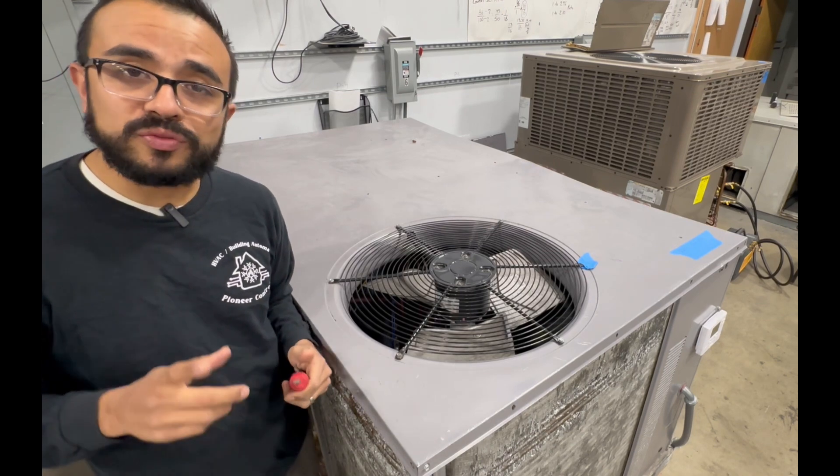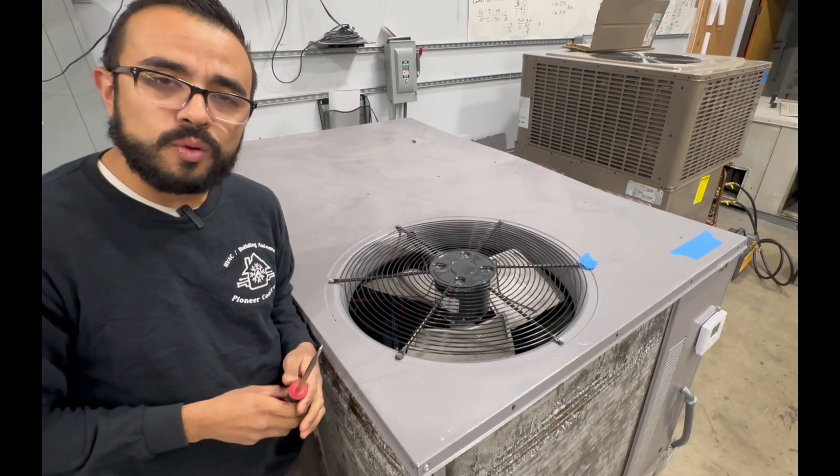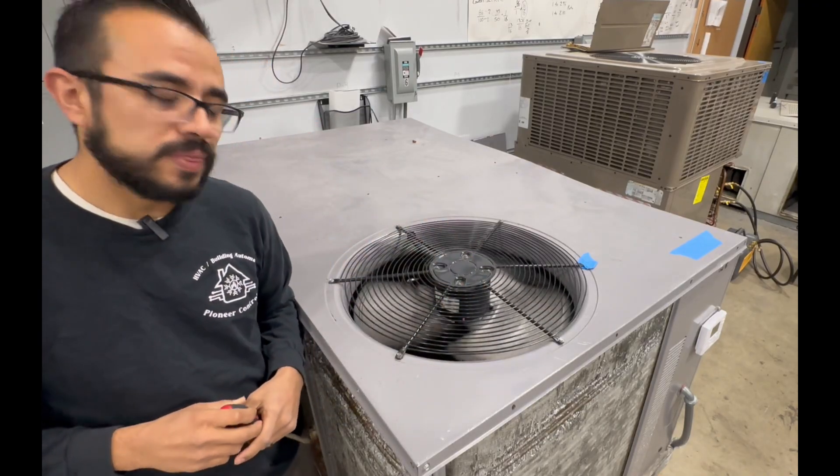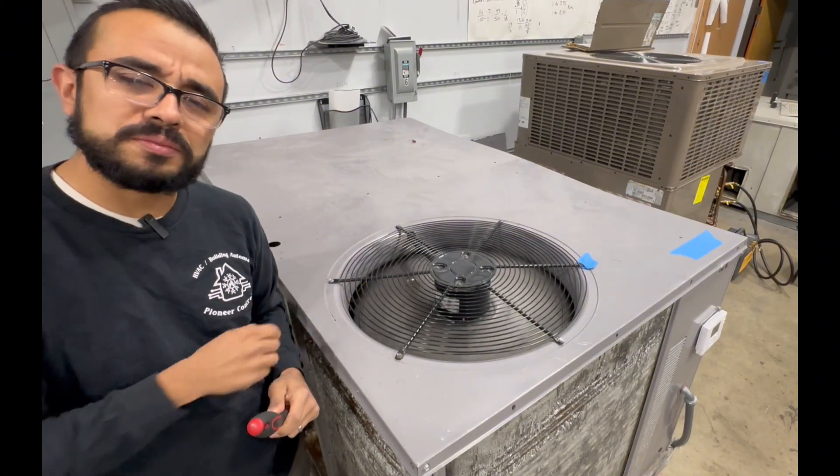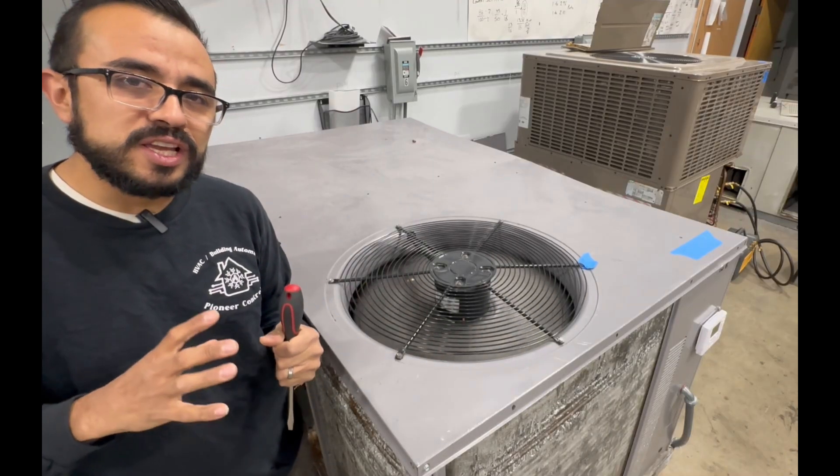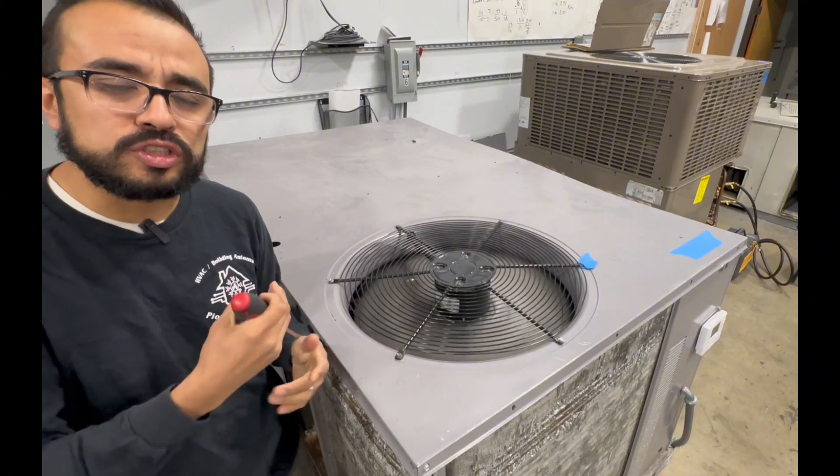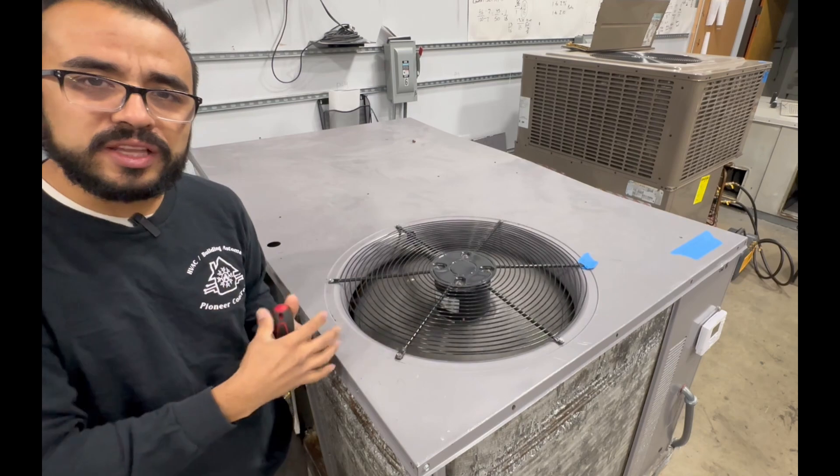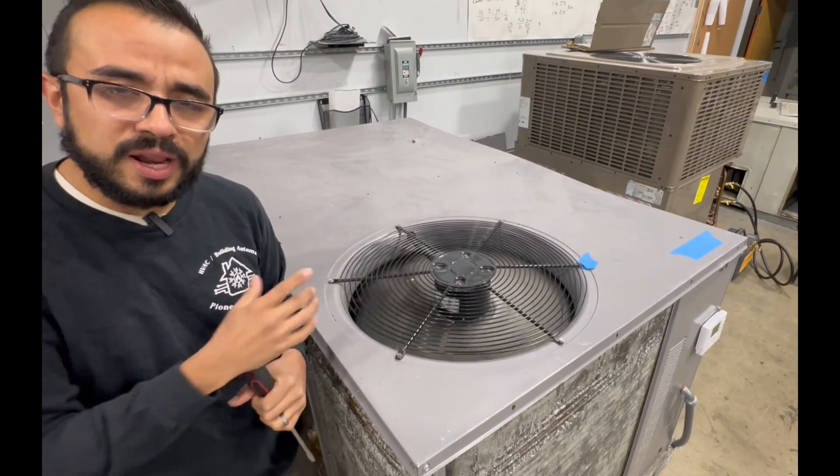Have you ever gone to a unit only to find out that the condenser fan is not working? Why is it that by simply getting a screwdriver and spinning it, the condenser fan now works? I disconnected the capacitor from it, but I'm basically doing the same function that start winding would do. I'm giving it a little push so it can get going and start spinning. But how do we check a condenser fan? How do we check if it's going to work when it receives power? Let's find out.